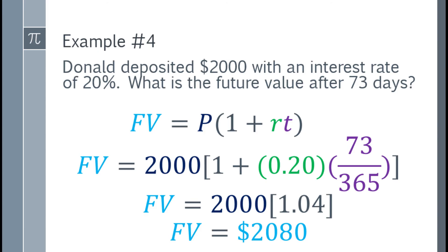Okay, in this problem, I used over 365. I used exact interest. We have what we call ordinary interest and exact interest. But for this one, let's use 365 for convenience. So going back to the problem, if you deposited $2,000 with an interest rate of 20%, and you want to get it after 73 days, your 2,000 will become $2,080.